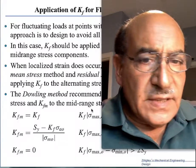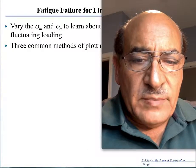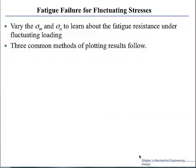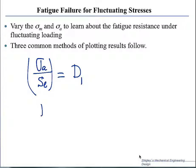We will move on and look at the possibility of having the alternating and the mean stress and ways to combine them to predict failure. The idea is that if we take the ratio of the alternating stress divided by the endurance limit, this fraction tells us how far we are from the material failing. If the alternating stress is close to the endurance limit, let's call this D1.